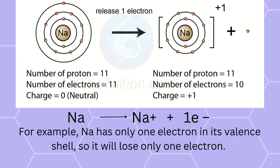For example, sodium has only one electron in its valence shell, so it will lose only one electron.